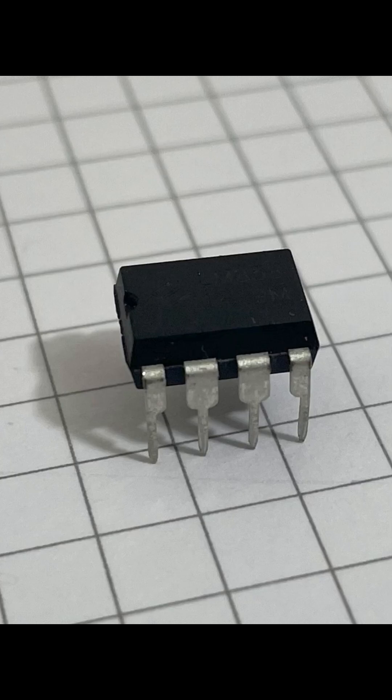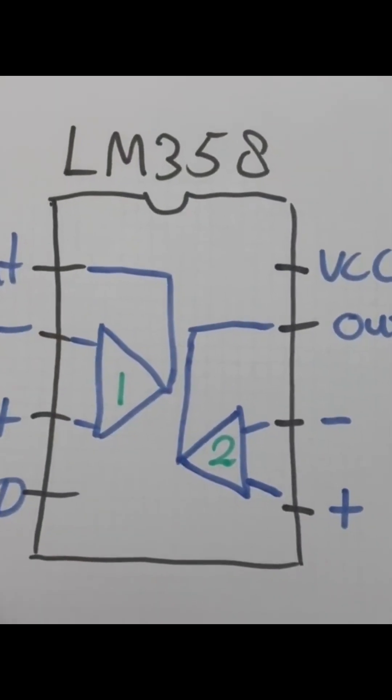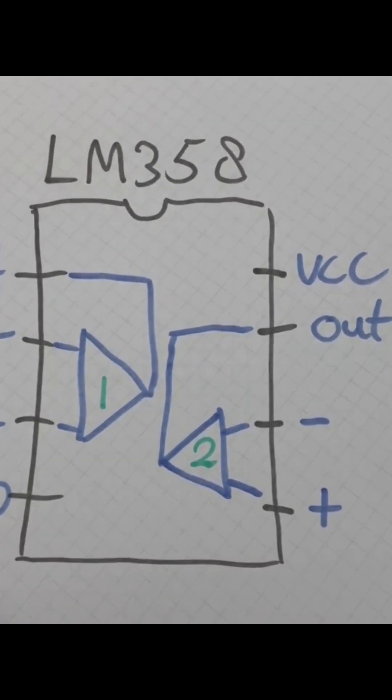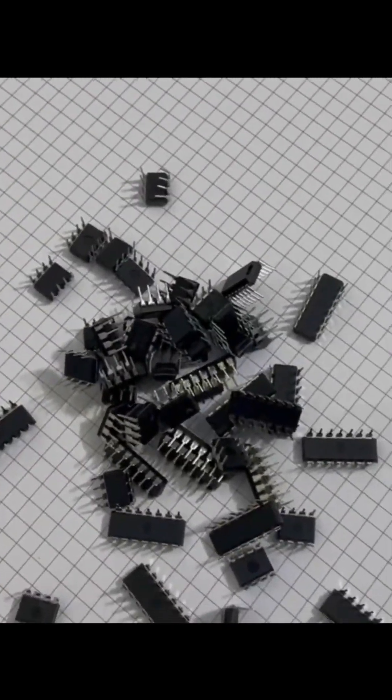The LM358 is an 8-pin IC with two op-amps in it. It is a very popular go-to solution for a lot of situations. I always have a couple of those flying around just in case.